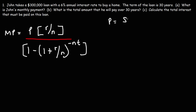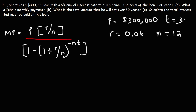Let's write down what we know. The principal is the value of the loan, which in this case is $300,000. R is the annual interest rate, which is six percent — but we need to convert that to a decimal. To convert a percent into a decimal, divide by 100, so six divided by 100 is 0.06. That's our r value. N is 12 because there are 12 months in a year, and T is the term of the loan in years, so T is 30.